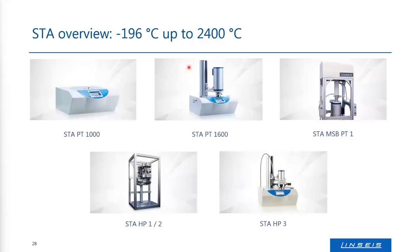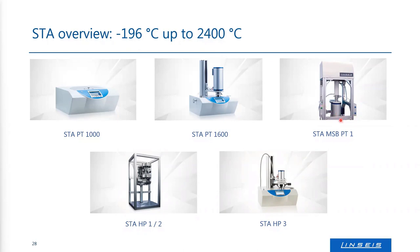Here is an overview of our product lines for STA instruments. We can cover a broad temperature range from minus 196 up to 2400 degrees Celsius. We have classical thermal balances, but also magnetic suspension balances for complex applications with corrosive gases, where the balance is separated from the sample room.